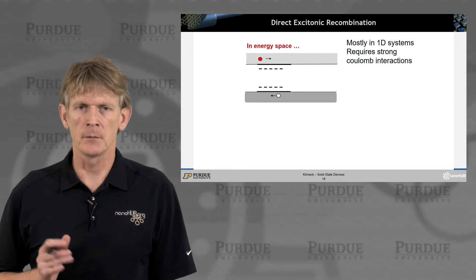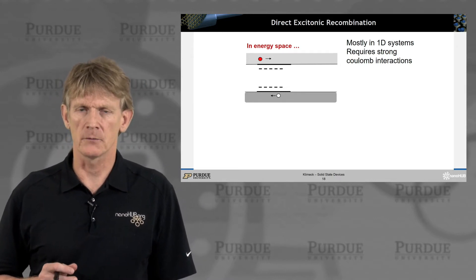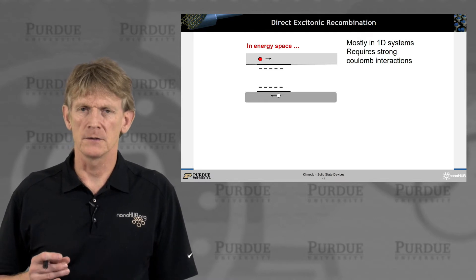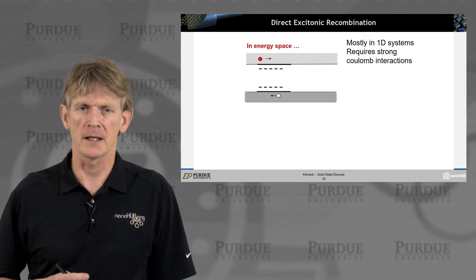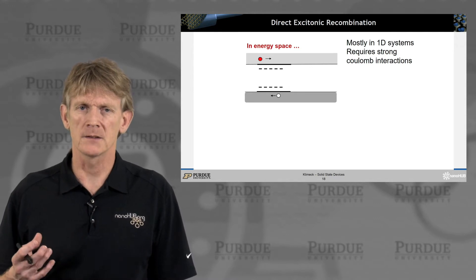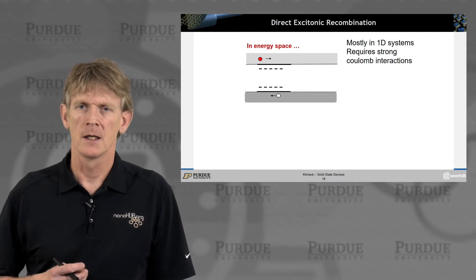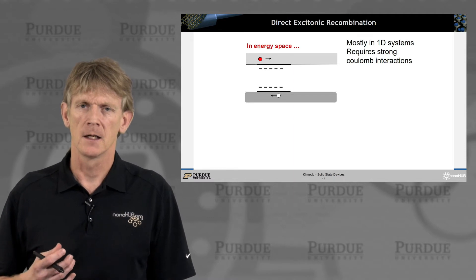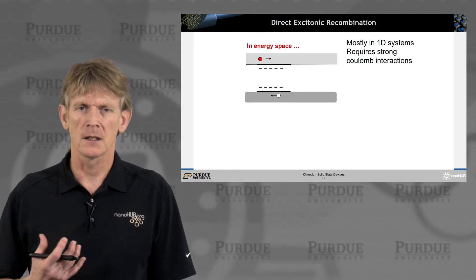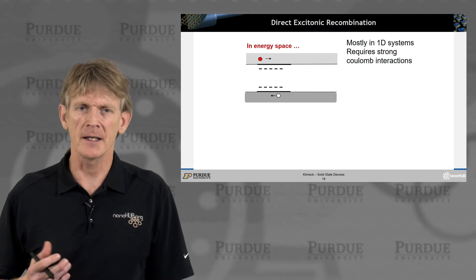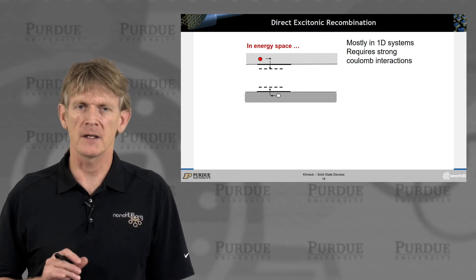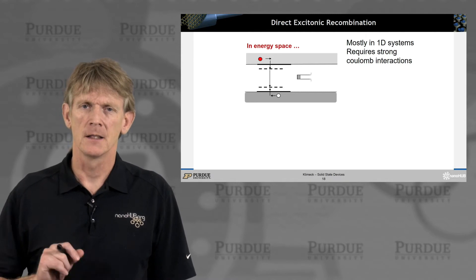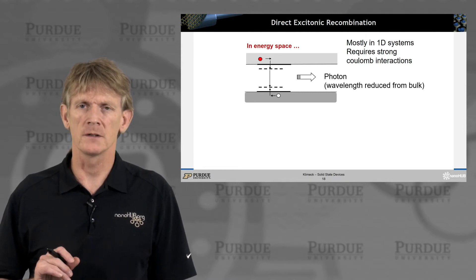Now, there's another similar-looking effect, but it's called an excitonic recombination. And that happens in 1D systems, meaning it's not 3D. You can find electrons along a line, or in quantum dots, where you can find them in zero-dimensional system. And it requires strong Coulomb interactions, where you need to bring electrons and holes close. And when you bring them close, they can build kind of a virtual pair with each other. They bind to each other, and their respective energy together is actually lower than the bandgap. And then they could collapse on each other and emit a photon that has now a different wavelength.